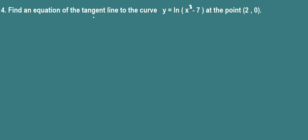Find an equation of the tangent line. To find the equation of the tangent line, we need a point — the x and y coordinates, which are given here as (2, 0). We need the slope of the tangent line. The slope of the tangent line is the same as the derivative, so we need to find the derivative of this function and evaluate it at x=2 to find the slope.